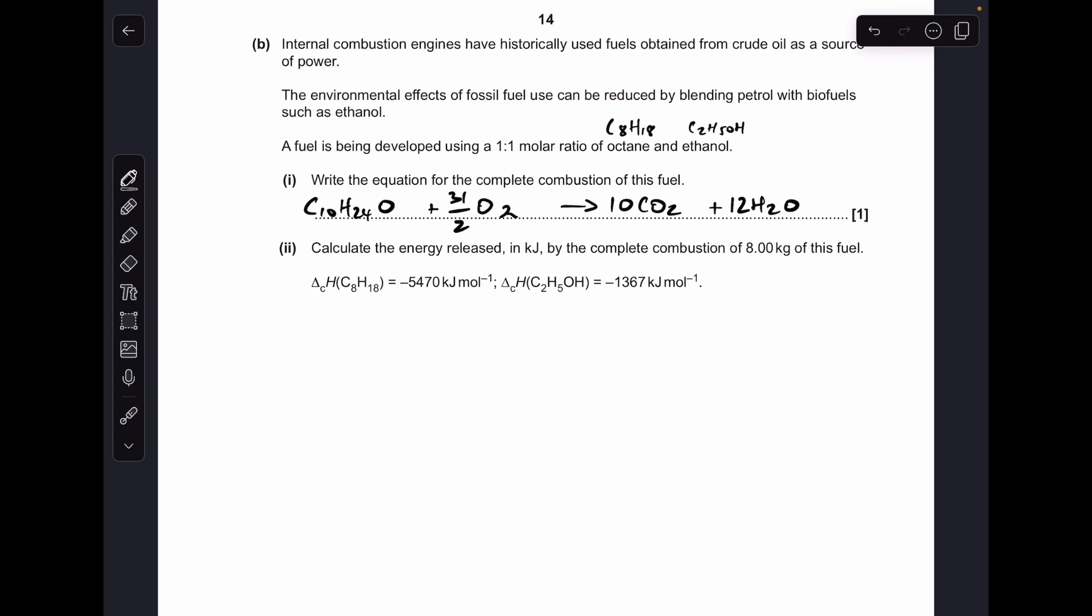So moving on to the calculation, we've got to calculate the energy released by the complete combustion of eight kilograms of the fuel. You can see all I've done here is kind of created a little equation for what's happened to generate the fuel. So if we've got eight kilos of this, we can work out the MR of that and then work out how many moles we've got. Eight kilos is 8000 grams, the MR of the fuel is 160, so there's 50 moles of fuel.